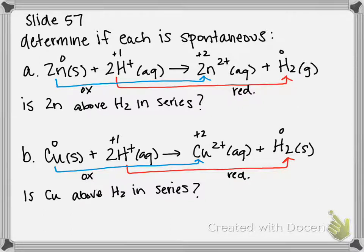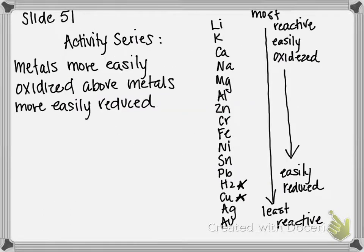I've already shown what's being oxidized and what's being reduced, and here we're going to once again use the activity series to determine for our oxidation that's occurring, is zinc actually above hydrogen on the activity series scale? Is it something that is more easily oxidized? So let me erase our previous example.